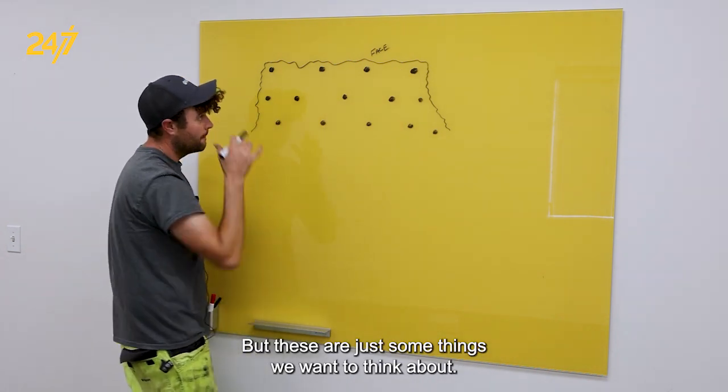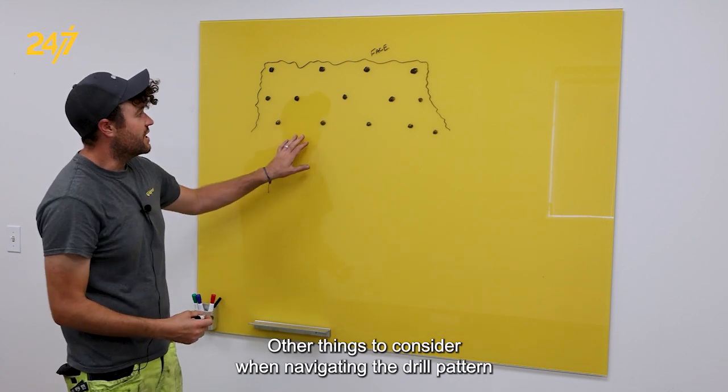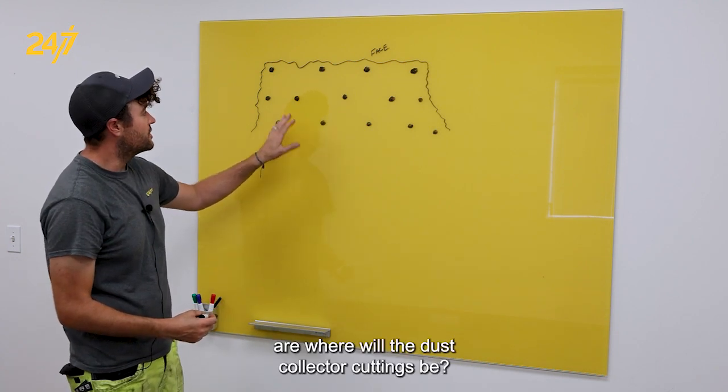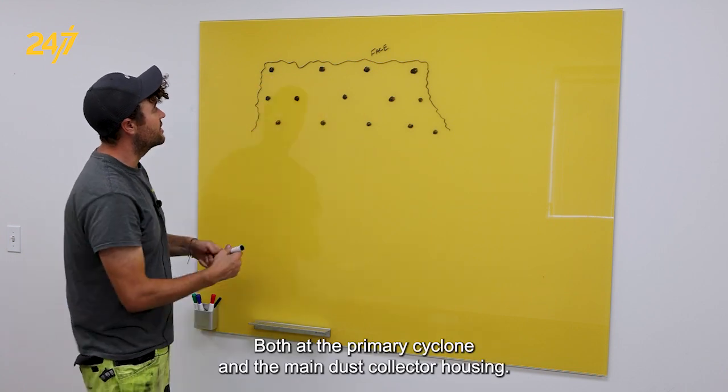These are just some things we want to think about. Other things to consider when navigating the drill pattern are where will the dust collector cuttings be, both at the primary cyclone and the main dust collector housing.